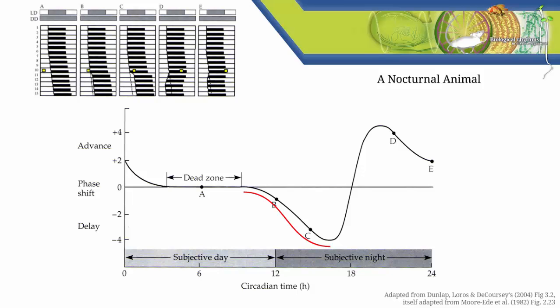Second, starting at the end of subjective day and continuing the first half of subjective night, it's possible to produce greater and greater phase delays, up to a point. You can generally predict that if you want to phase delay any free-running organism using light, you're going to need to give it a pulse of light at some time during this phase.